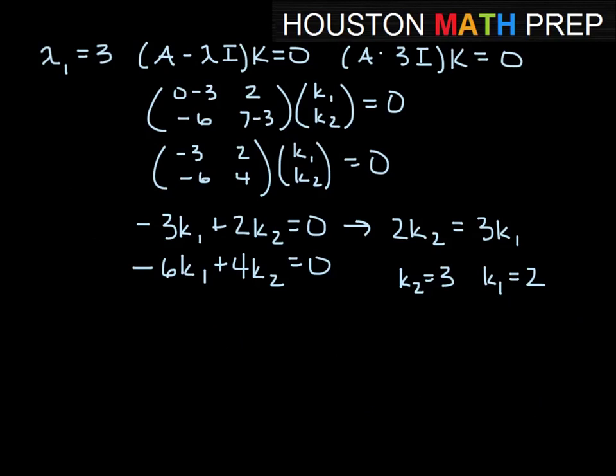So just choosing easy lowest term whole numbers that work for this, we could let K₂ equal 3 if K₁ equals 2, and then both sides would be 6. So for our eigenvalue, our first eigenvalue of 3, we get an eigenvector that corresponds with that, which is 2, 3. So we have our first eigenvalue and eigenvector.